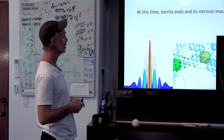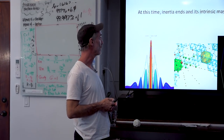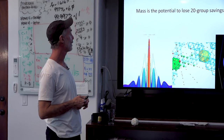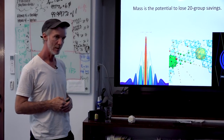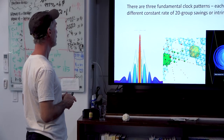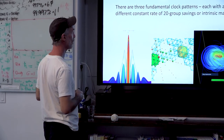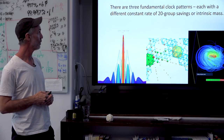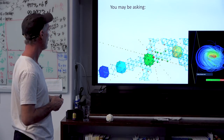At this time, inertia ends and its intrinsic mass is regained. So mass, therefore, is the potential to lose AB equals P solutions or 20-group savings. There are three fundamental clock patterns, each with a different constant rate of 20-group savings, or intrinsic mass.